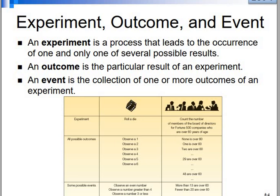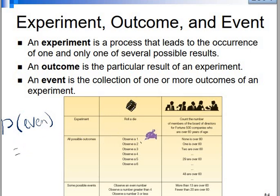An event is, for example, what is the probability of getting an even number when we roll a die? So that is the event, and we calculate the probability of the event happening. An even number means 2, 4, and 6 — therefore we have 3 over 6, or 1 over 2.